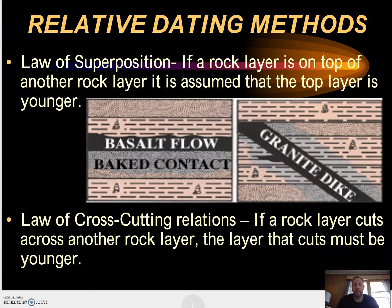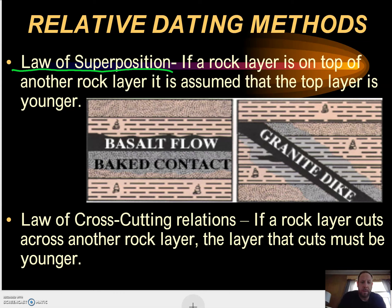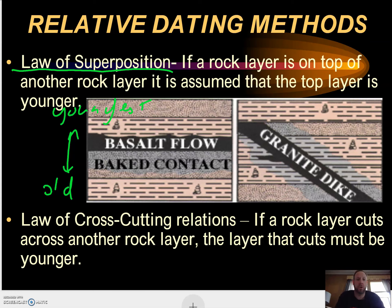Let's talk quickly about relative dating. A couple of laws you have to remember. The Law of Superposition tells us that rock layers were laid down one on top of the other, so we always assume that the oldest is at the bottom and the youngest is at the top. We will never look at a situation where rock layers have been overturned.